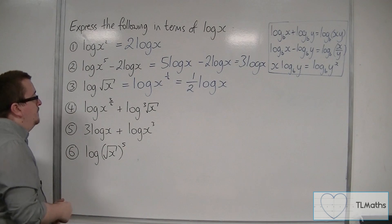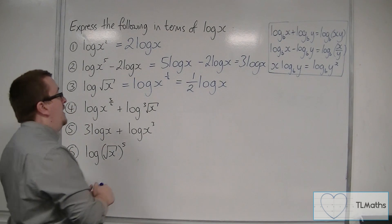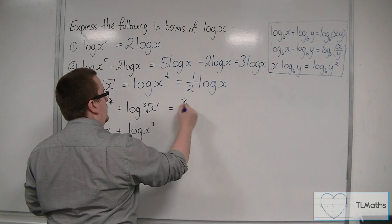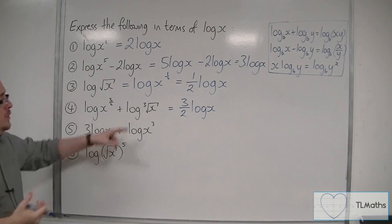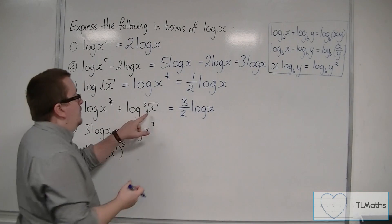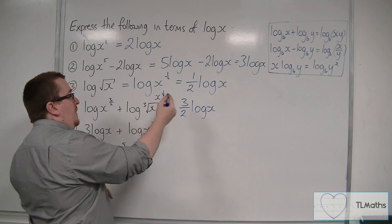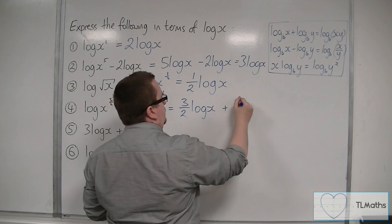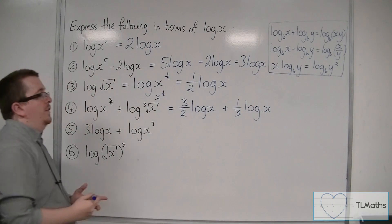Let's try the fourth one. The log of x to the three halves - the three halves can come down to the front. I've got log of the cube root of x. Now, the cube root of x is x to the one-third, so the third can come down to the front, and I'd be left with one third log x.